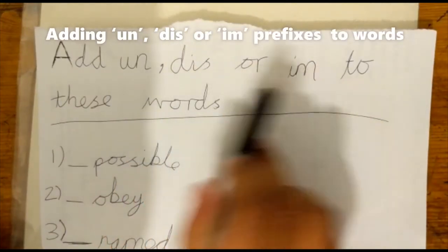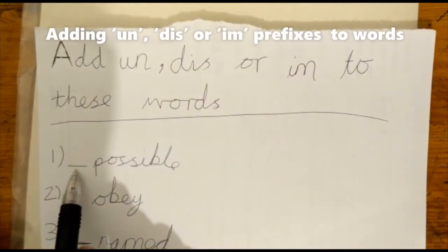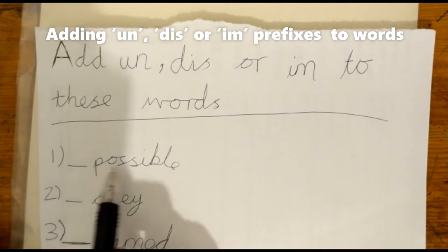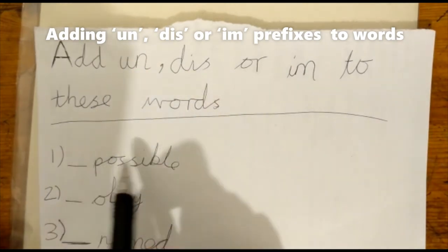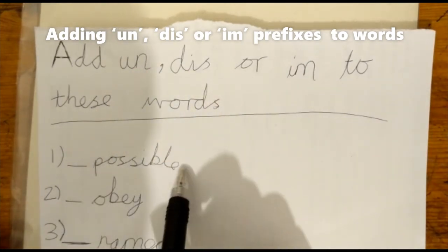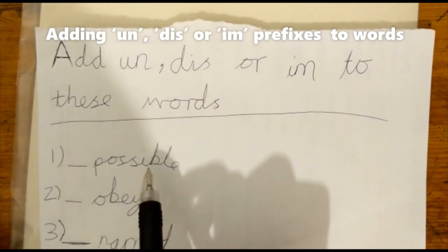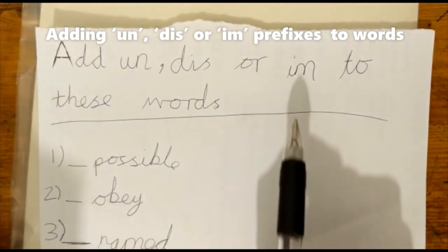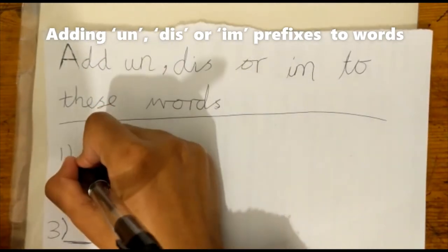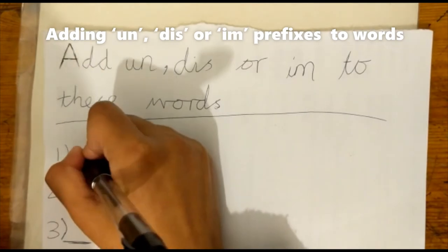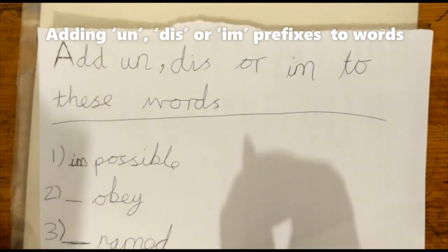Add un, dis, or im to these words. So we have something possible. If we try un-possible, that is not a word. If we try dis-possible, that's not a word. But if we try impossible, that is a word. So the missing prefix is im.